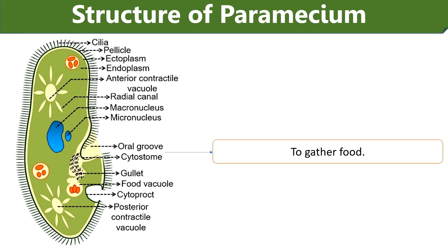Oral apparatus: It is comprised of oral groove, cytostome and anal pore. The oral groove is present on the ventral side of the body and allows the entry of food through the help of cilia. The cilia present in the cytostome bring the food material down to the cytopharynx, and after absorption of nutrients, the anal pore present on the posterior side eliminates the undigested food from the body.